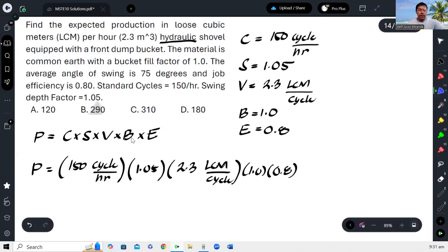Again, if we look at the units, this will cancel out. Hence, we will have the production units in loose cubic meter per hour.